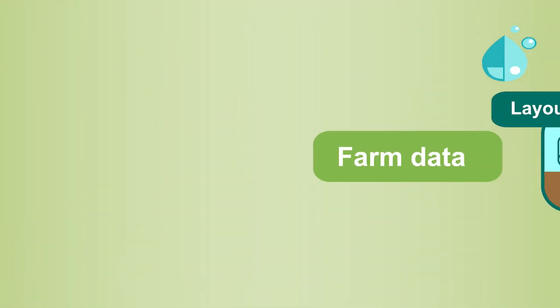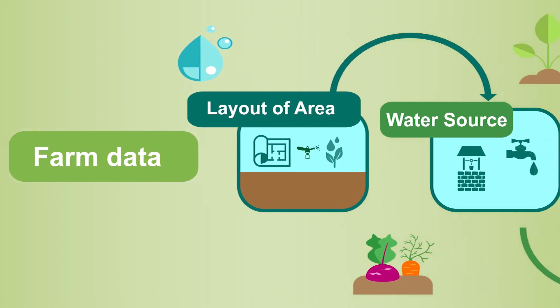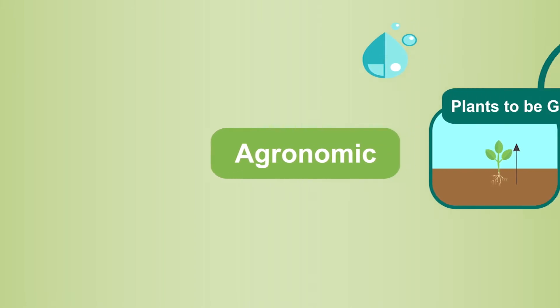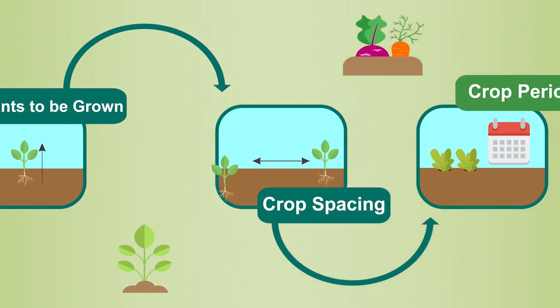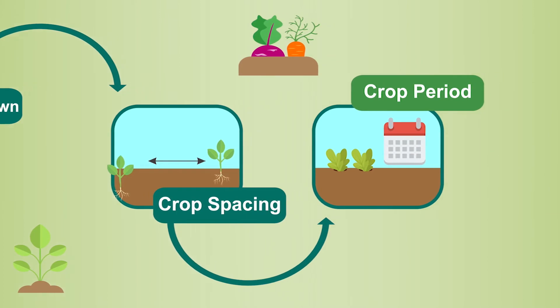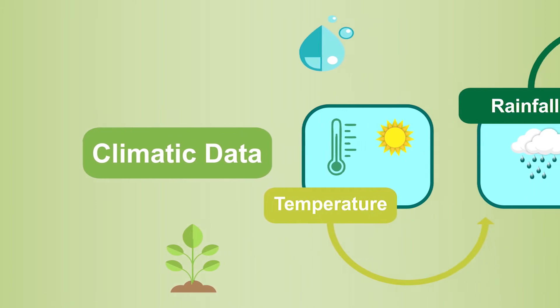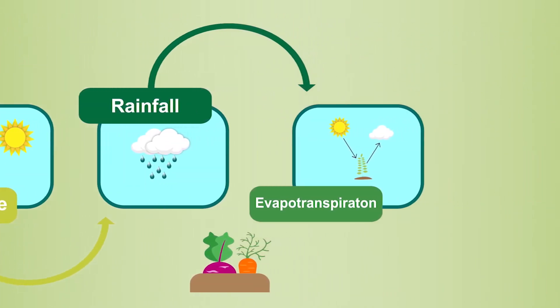Farm data may include layout of the area, details of the water source, soil type, agronomic details such as plants to be grown, crop spacing, crop period, etc. It also includes climate data such as temperature, rainfall, evapotranspiration, etc.